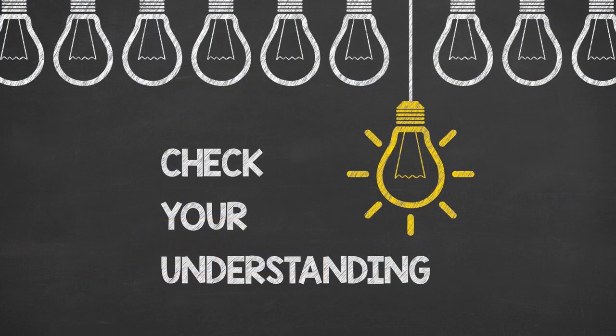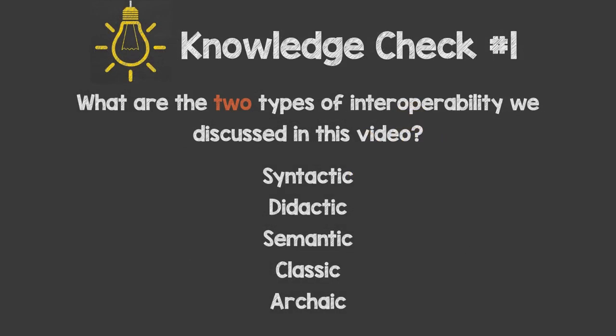Let's wrap up by reviewing some of the things we just learned. After each question, you may pause the video to answer on your own before we reveal the correct answer. What are the two types of interoperability that were discussed in this video? The correct answers are syntactic and semantic. As a reminder, syntactic interoperability focuses more on the structure of the data, while semantic interoperability focuses on the interpretation of the content.